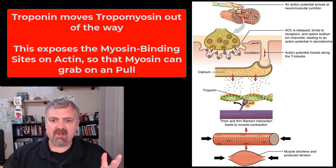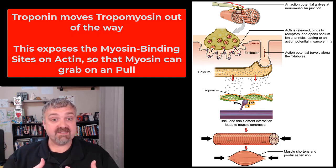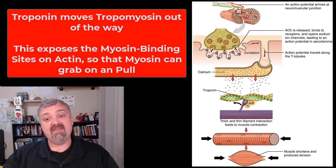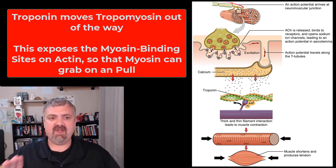The technical terminology here: troponin — the shielding protein — moves what's called tropomyosin out of the way, and that exposes the myosin binding sites on actin.